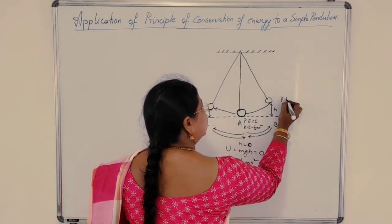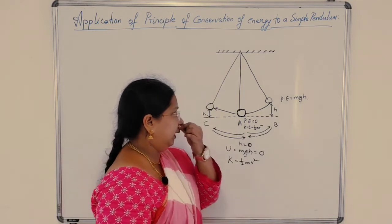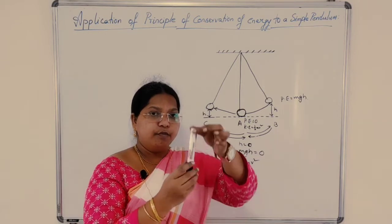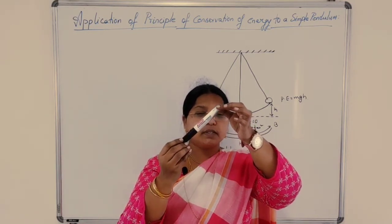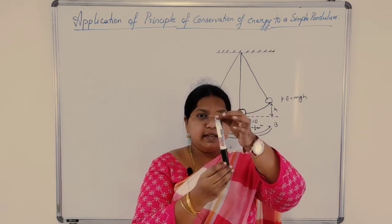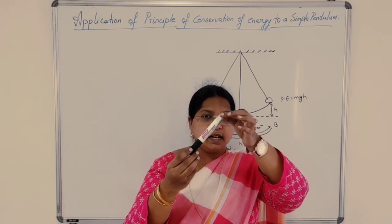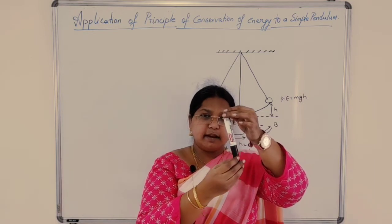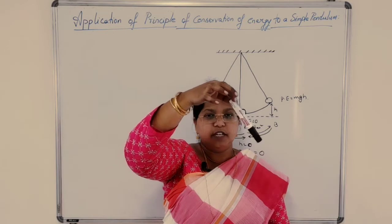At position B, your potential energy is maximum and equals MgH. Listen carefully: when the body is moving from A to B, it stops — momentarily it stops for a fraction of a second and moves back. So it moves to B, stops for a second, comes back, then moves to position C and comes back again. This is the motion of a simple pendulum.